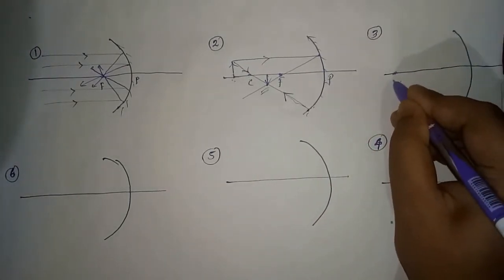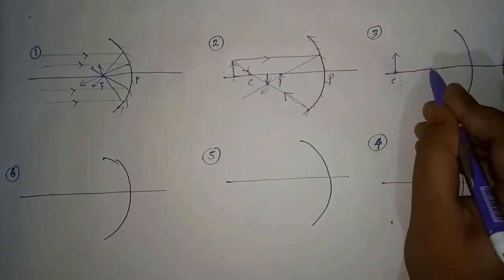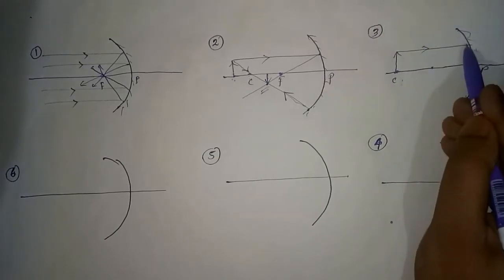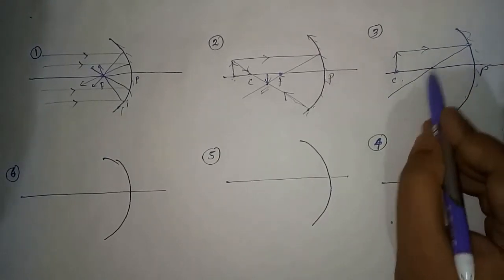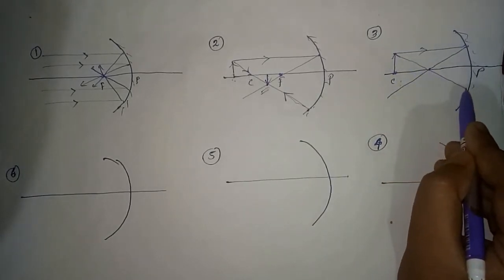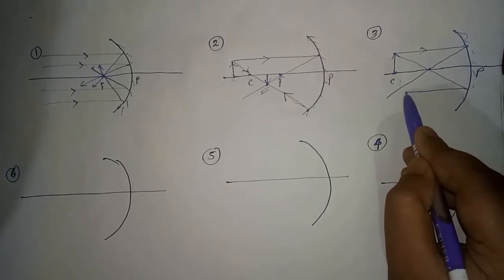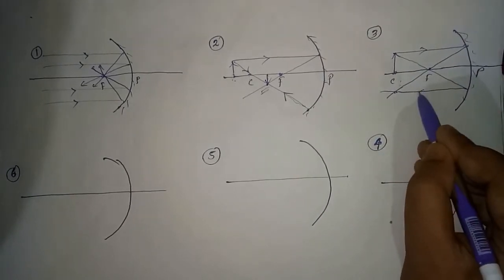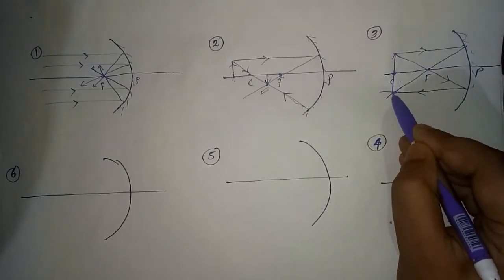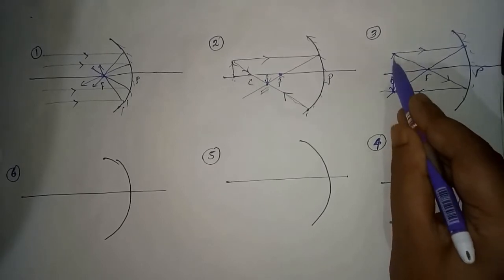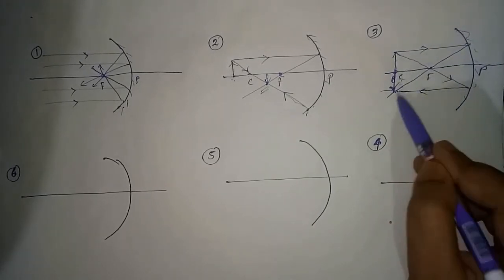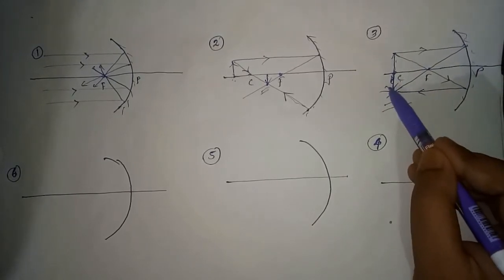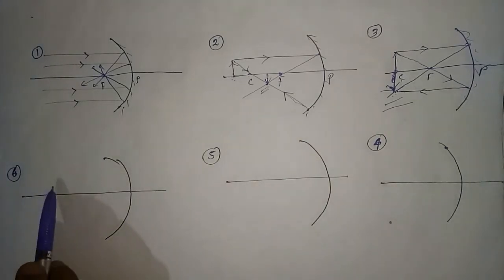Case 3: when the object remains at C, one ray will go parallel to the principal axis and, after reflection, pass through the focus. The other ray will go through the focus and, after reflection, travel parallel to the principal axis. The point of intersection of the two rays gives the position of the image. Hence, when the object is at C, the image will also be produced at C. The size of the image will be the same as the object, and the nature of the image will be real and inverted.